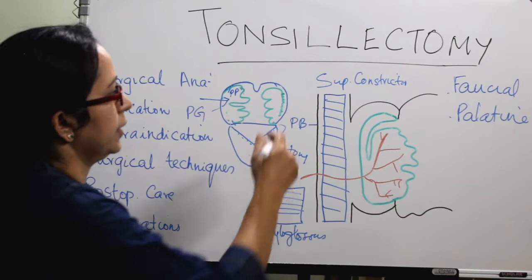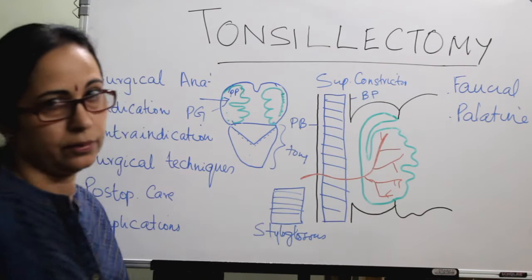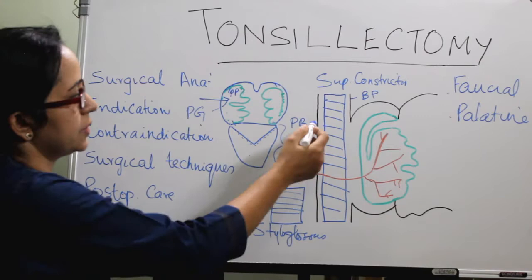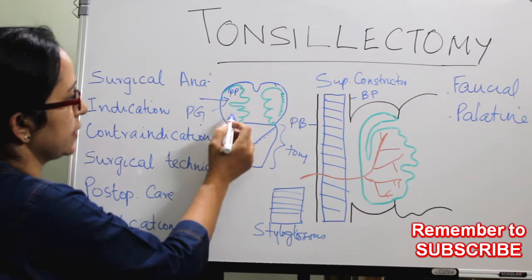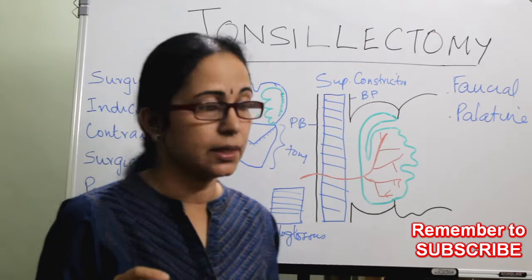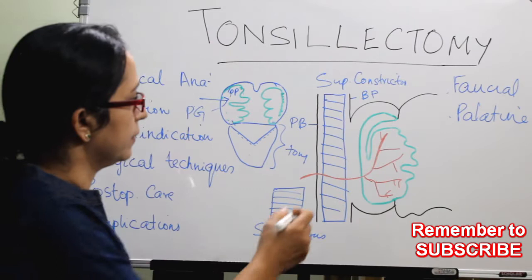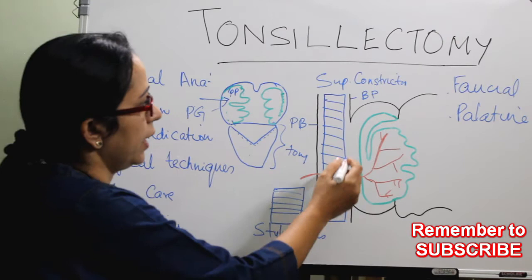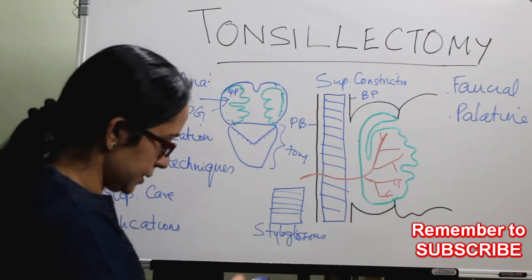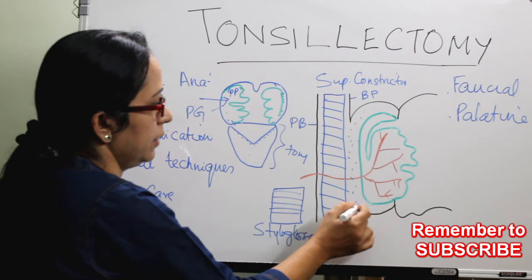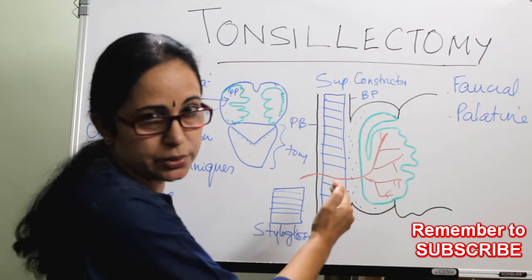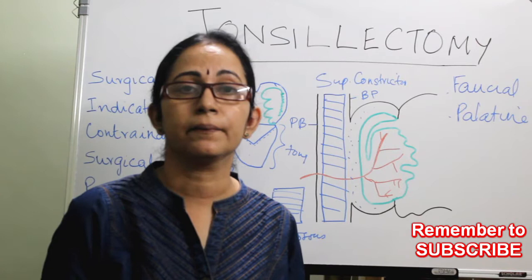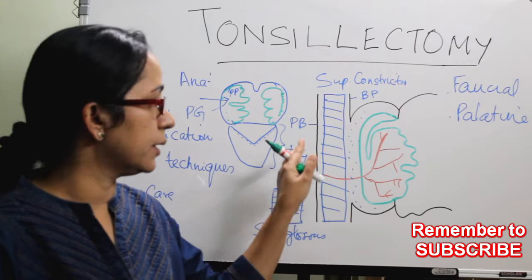Inside is the buccopharyngeal fascia. From lateral to medial, the layers are: styloglossus, then pharyngeal basilar fascia, then superior constrictor, then buccopharyngeal fascia. There is a well-developed capsule on the lateral surface. Medially the surface is irregular, with multiple crypts — the largest crypt is called the crypta magna. Between the capsule and the superior constrictor there is a loose areolar tissue. This loose areolar tissue helps you find the correct plane during tonsillectomy, making dissection easier and reducing bleeding.